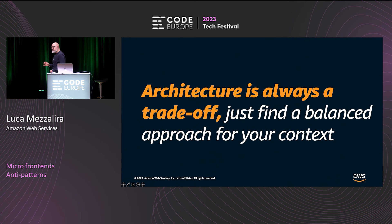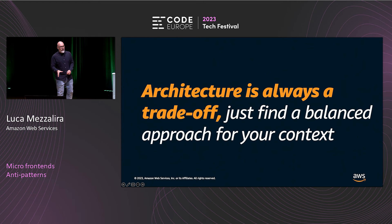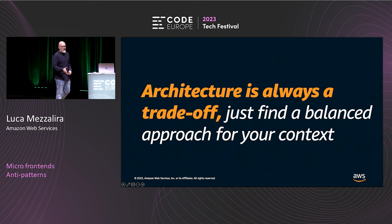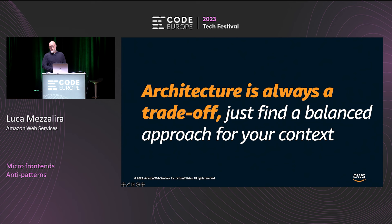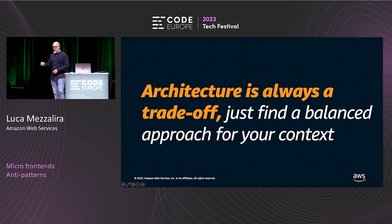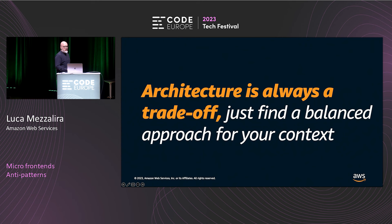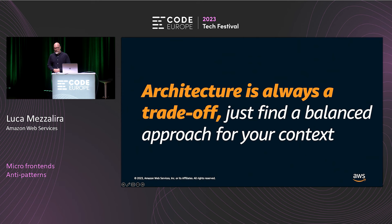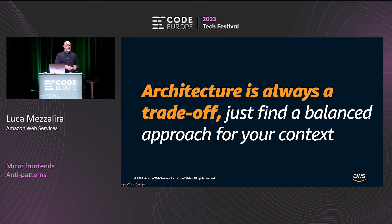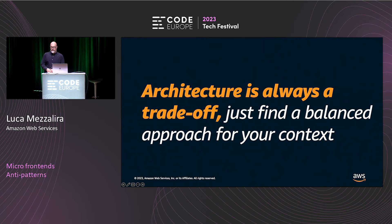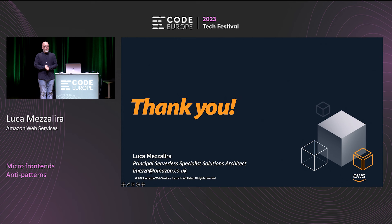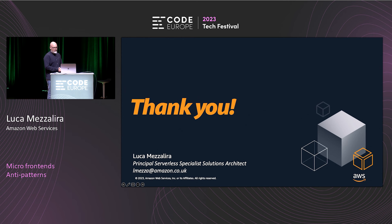Last but not least: there isn't right or wrong in architecture — it's always a trade-off. The most important thing is understanding your context. Some things I've listed here as anti-patterns may fit perfectly in a specific use case. Patterns and anti-patterns suggest common situations, but if you have a strong argument and your specific context fits, apply an anti-pattern — no one will complain if you have a good justification. That's all I got. I hope you enjoyed the session and thanks for being part of this last talk of the conference.